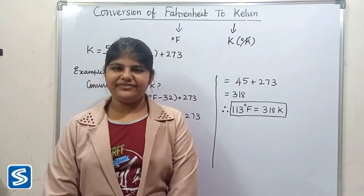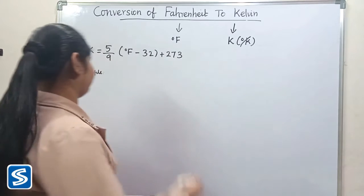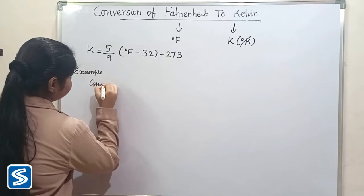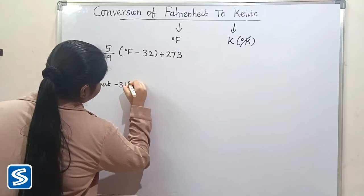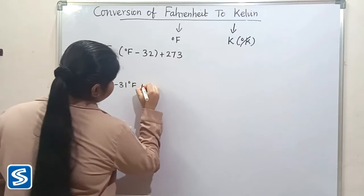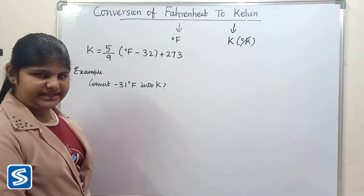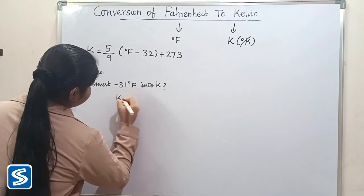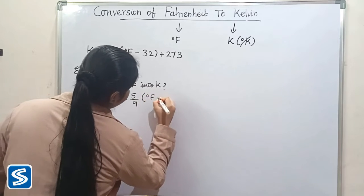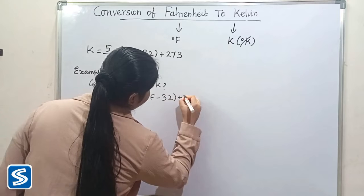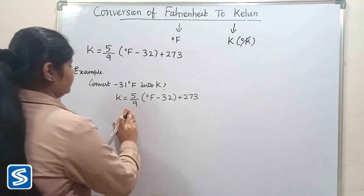Next, we will take one more example. We will convert minus 31 degree Fahrenheit into Kelvin. We already know that Kelvin is equal to (5/9) × (degree Fahrenheit − 32) + 273.